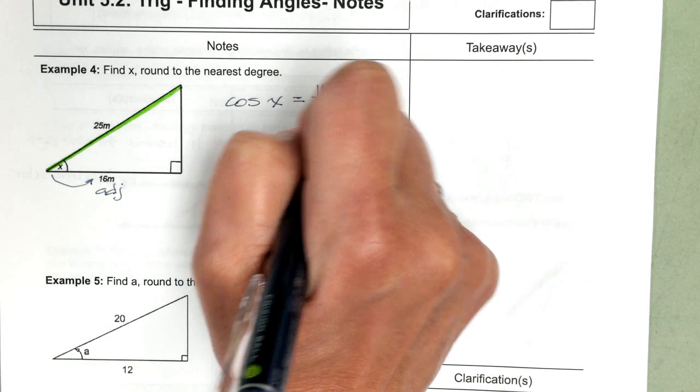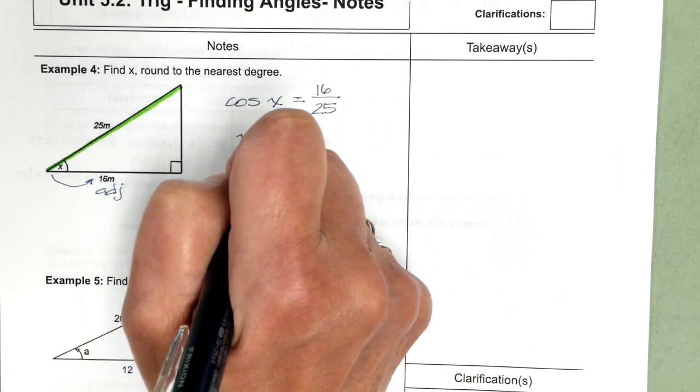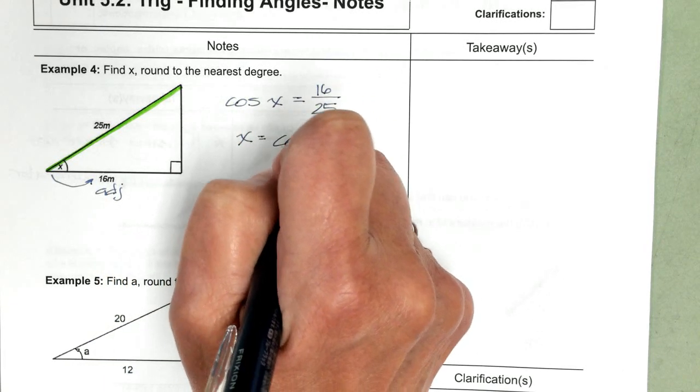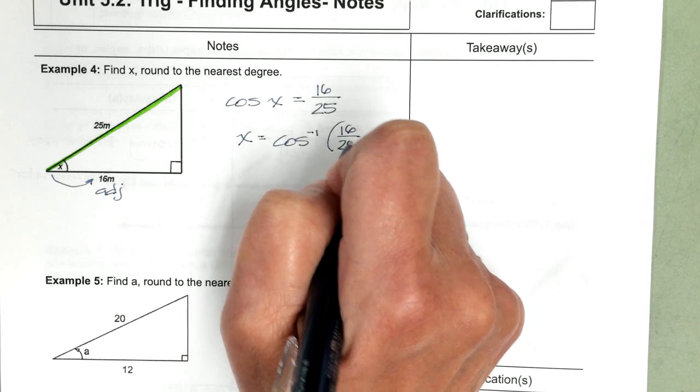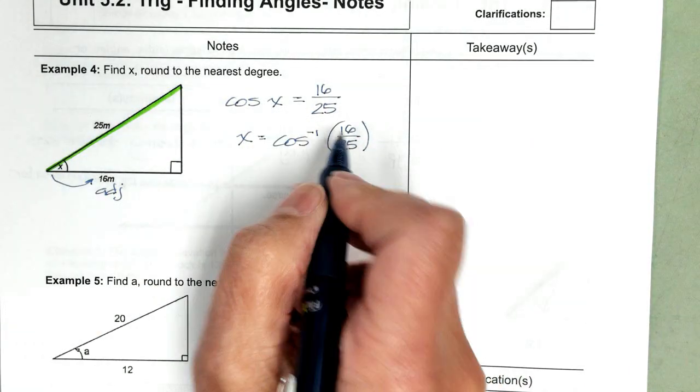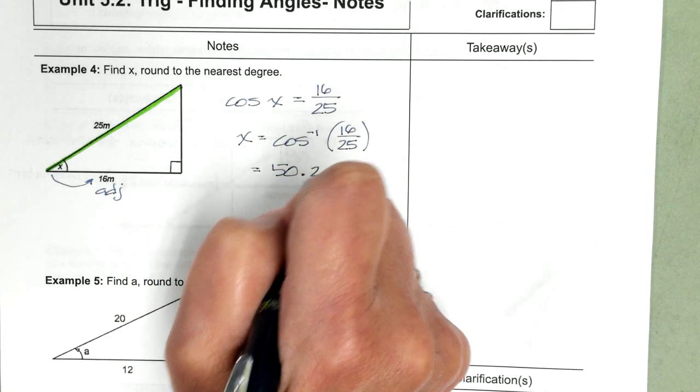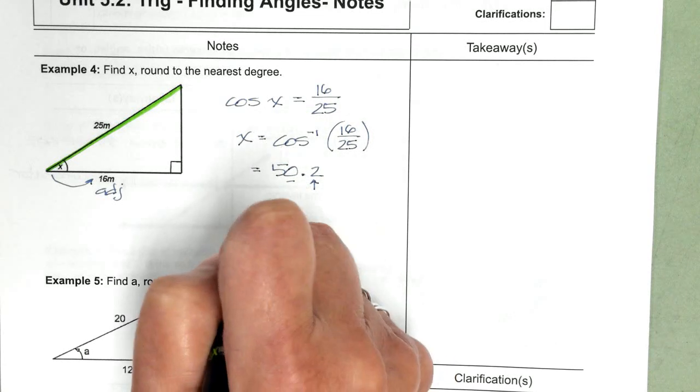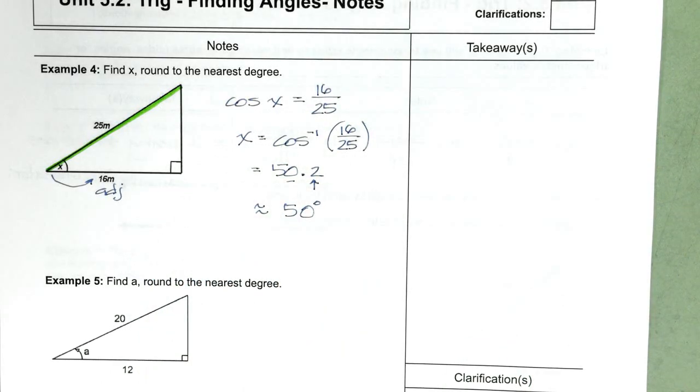Our ratio is 16 over 25. We will take the inverse cosine of 16 divided by 25. Which will give us 50.2. Which means X is approximately 50 degrees.